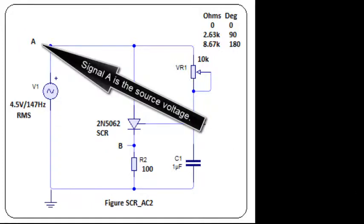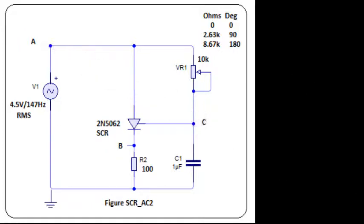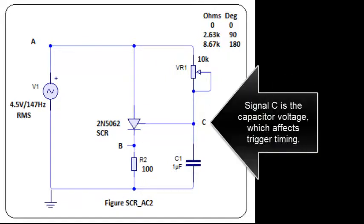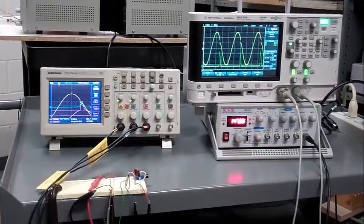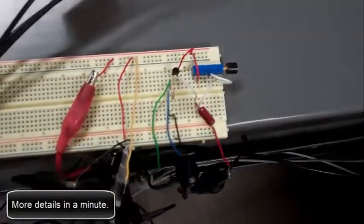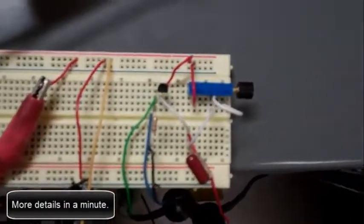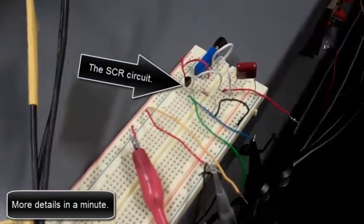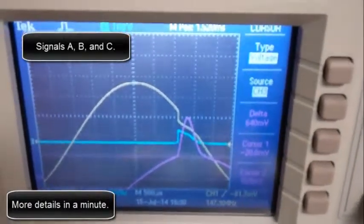Signal A is the source voltage. Signal B is the load voltage. Signal C is the capacitor voltage, which affects trigger timing. More details in a minute, but first an overview of the SCR circuit. Signals A, B, and C on that oscilloscope.